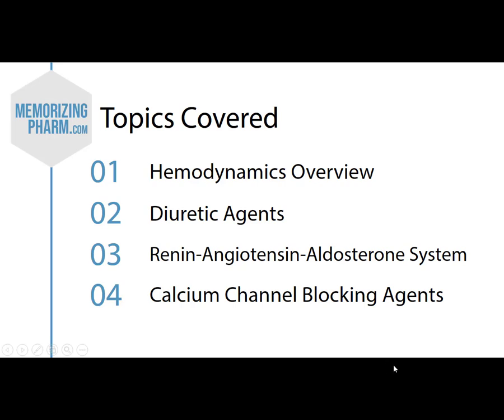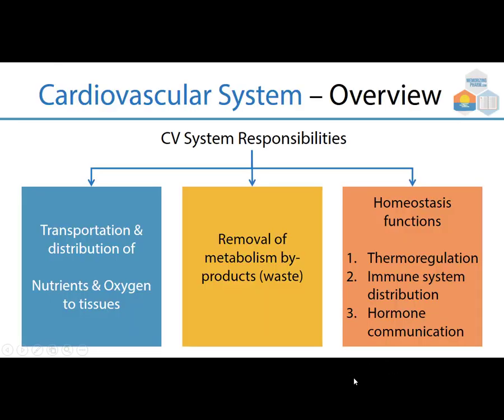Let's start with an overview of the cardiovascular system. The responsibility of the cardiovascular system is to distribute and transport nutrients and oxygen to the tissues, and also to get rid of waste. Then there's homeostasis — keeping things normal. Thermoregulation, immune system distribution, hormone communication — all of these are the responsibility of the cardiovascular system.